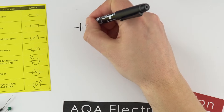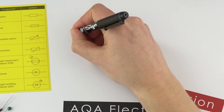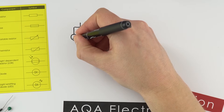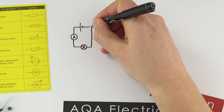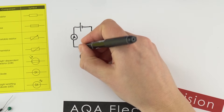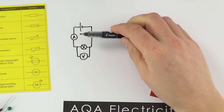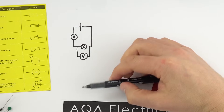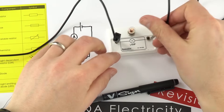In the simplest case we might have a power supply — so a cell — we might have an ammeter, and you always put the ammeter in series. This is connected to maybe a lamp, and when the circuit is connected it starts shining. We can also use a voltmeter to measure the potential difference across a component. It's always worth remembering that ammeters go in series and voltmeters go in parallel. This gives us a really simple circuit.